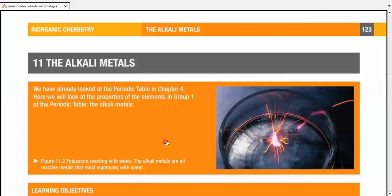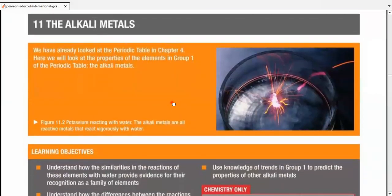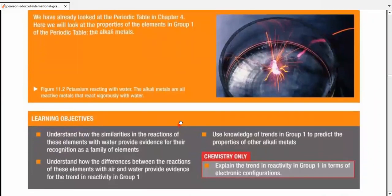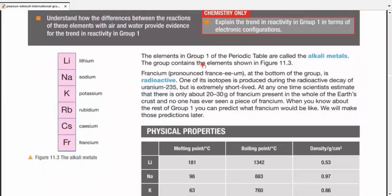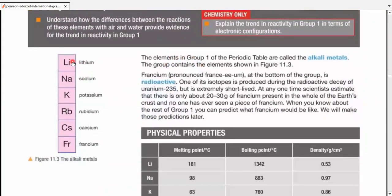The alkali metals. Looking at the periodic table, the alkali metals are actually Group 1. It starts from lithium (Li), sodium (Na), potassium (K), rubidium (Rb), cesium (Cs), and francium (Fr).